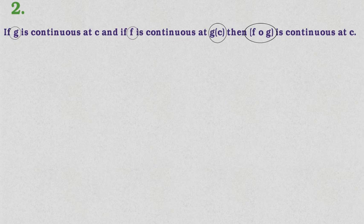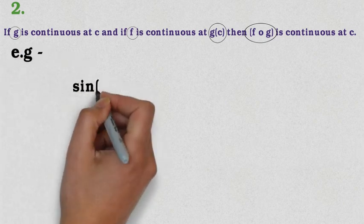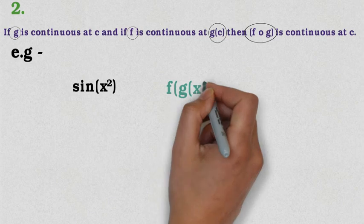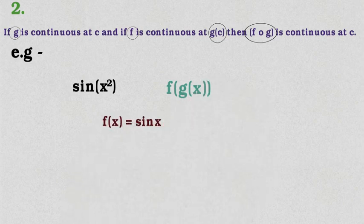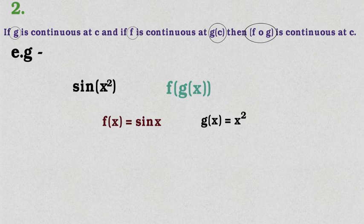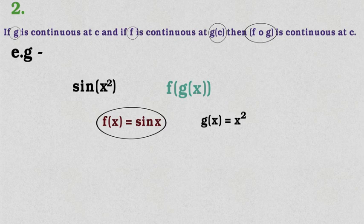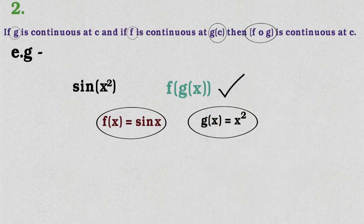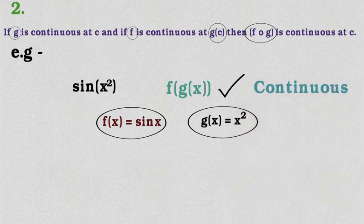So f ∘ g will be continuous. Let's apply this: consider f ∘ g where g(x) = x² and f(x) = sin x. Here g(x) = x² is always continuous on its domain, and f(x) = sin x is also continuous on the real line as seen in the previous example. So f ∘ g, which is sin(x²), is continuous on its entire domain and the real line.